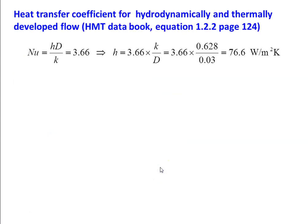The heat transfer coefficient for hydrodynamically and thermally developed flow, from data book equation 2.2, page 124: for laminar flow at constant wall temperature, Nu = h·D/k = 3.66. Therefore, h = 3.66 × k/D = 3.66 × 0.68 / 0.03 = 76.6 W/m²·K. The thermal entry length xt = Pr × x = 4.34 × 1.15 ≈ 4.969 m.